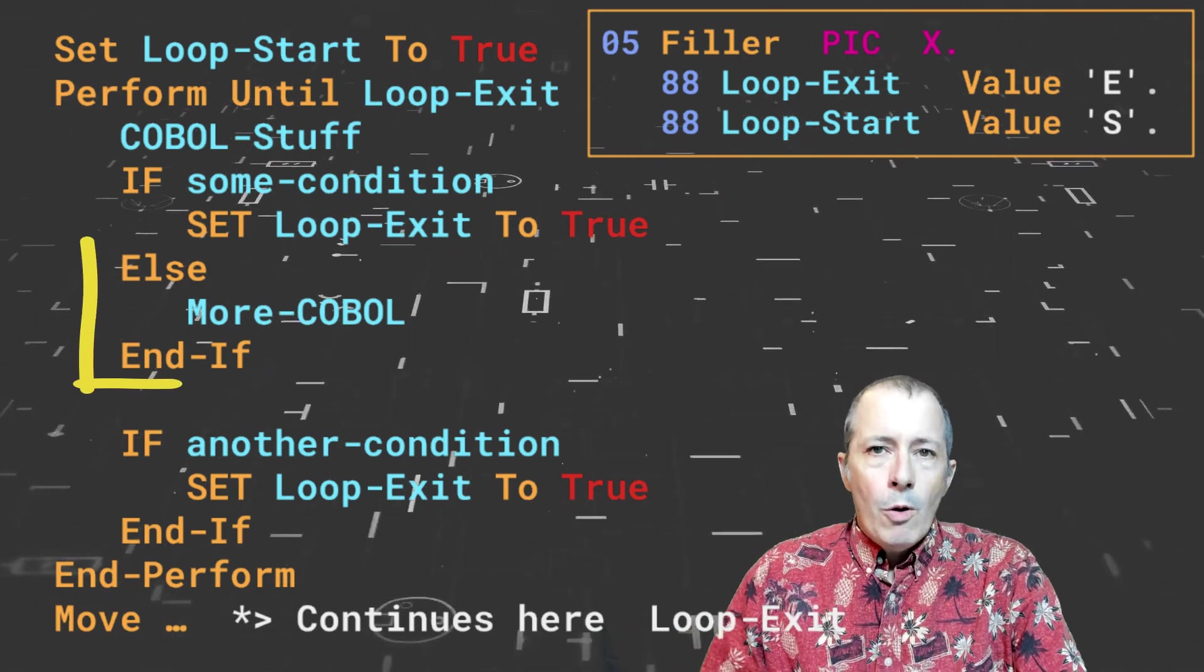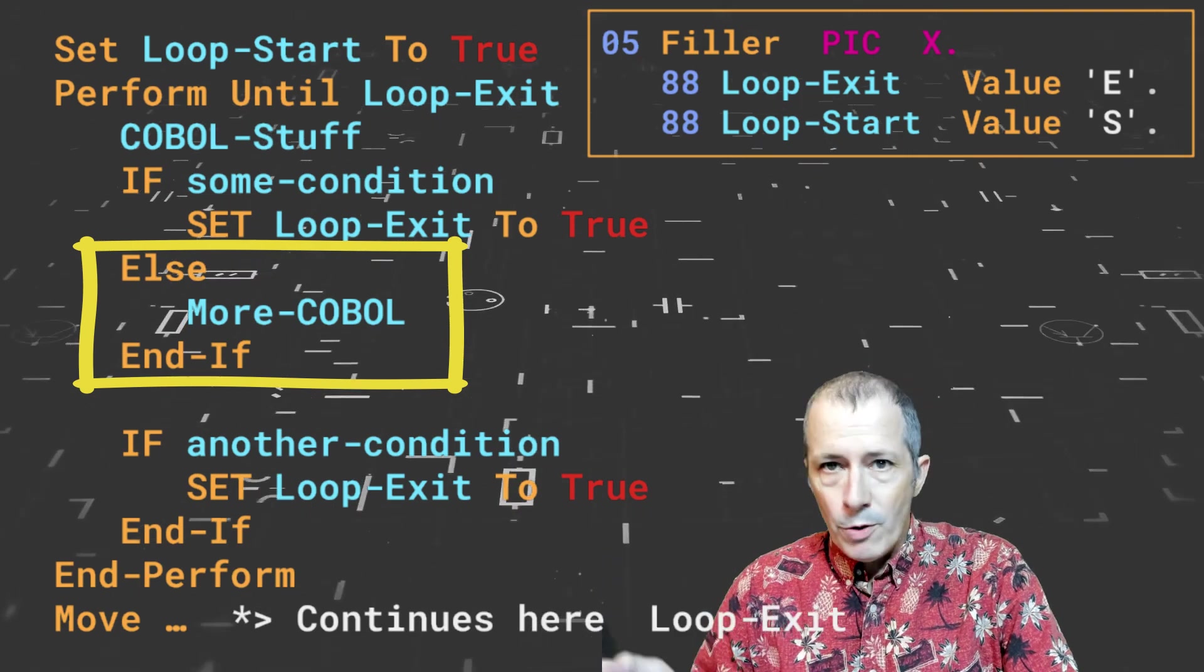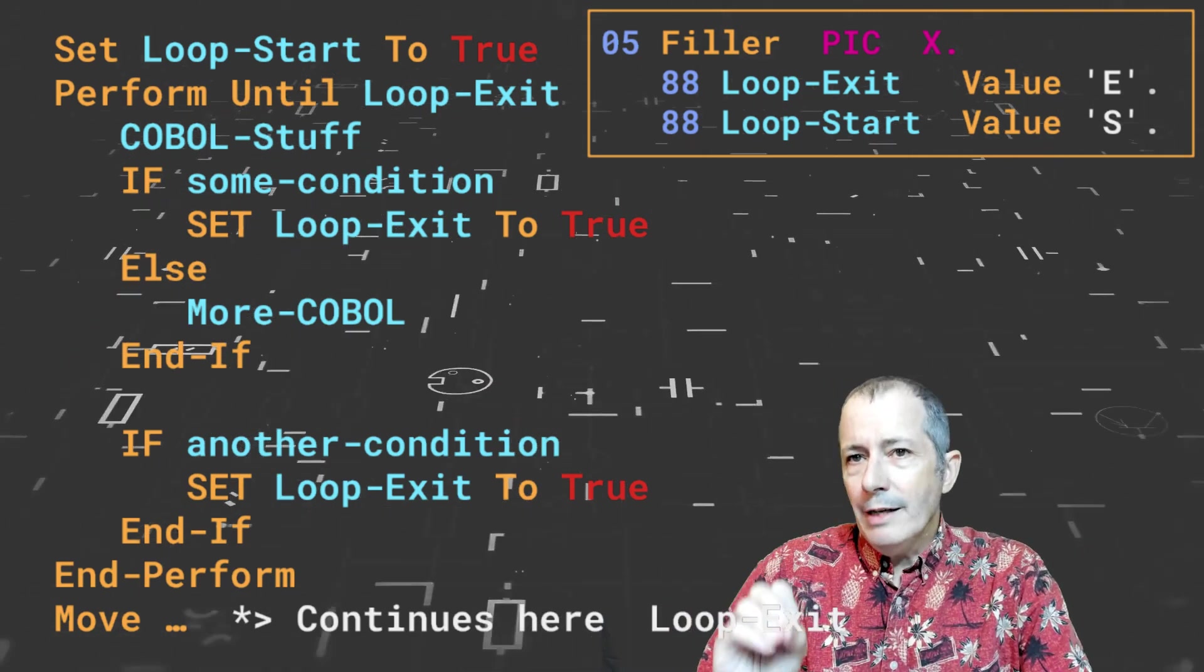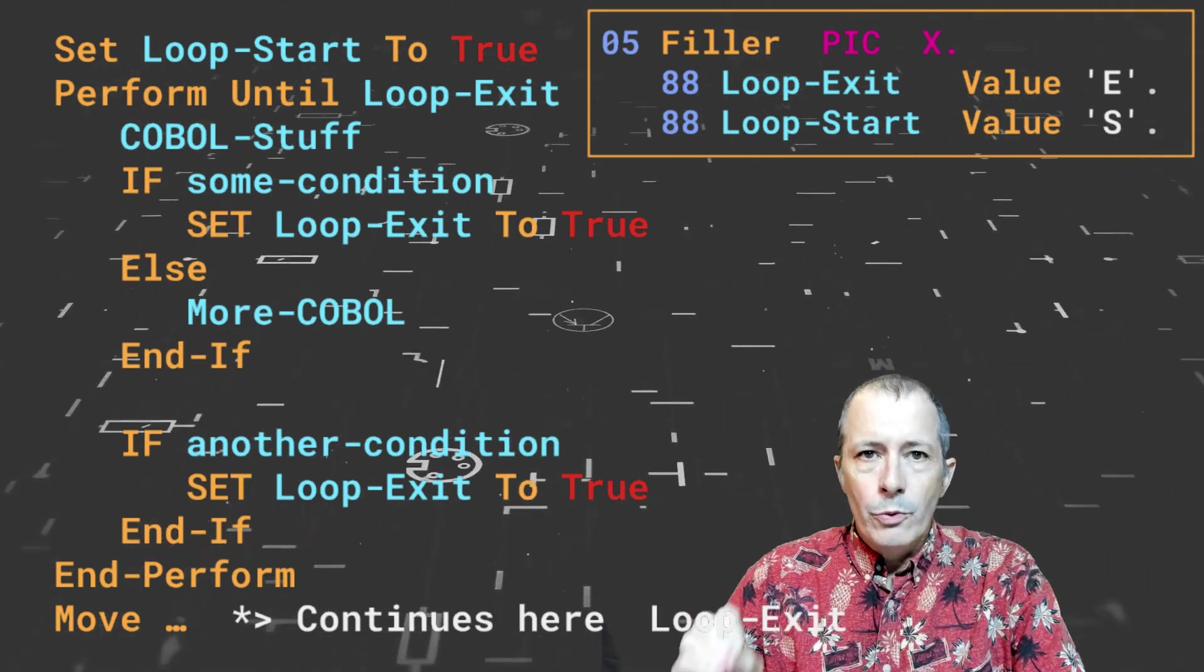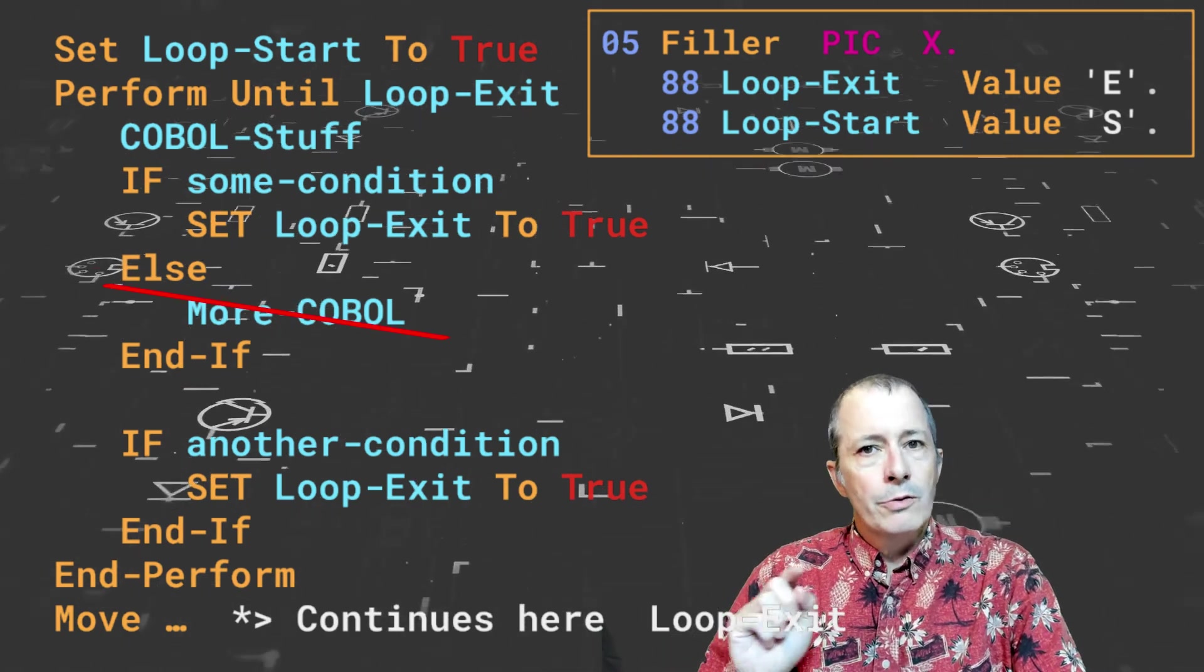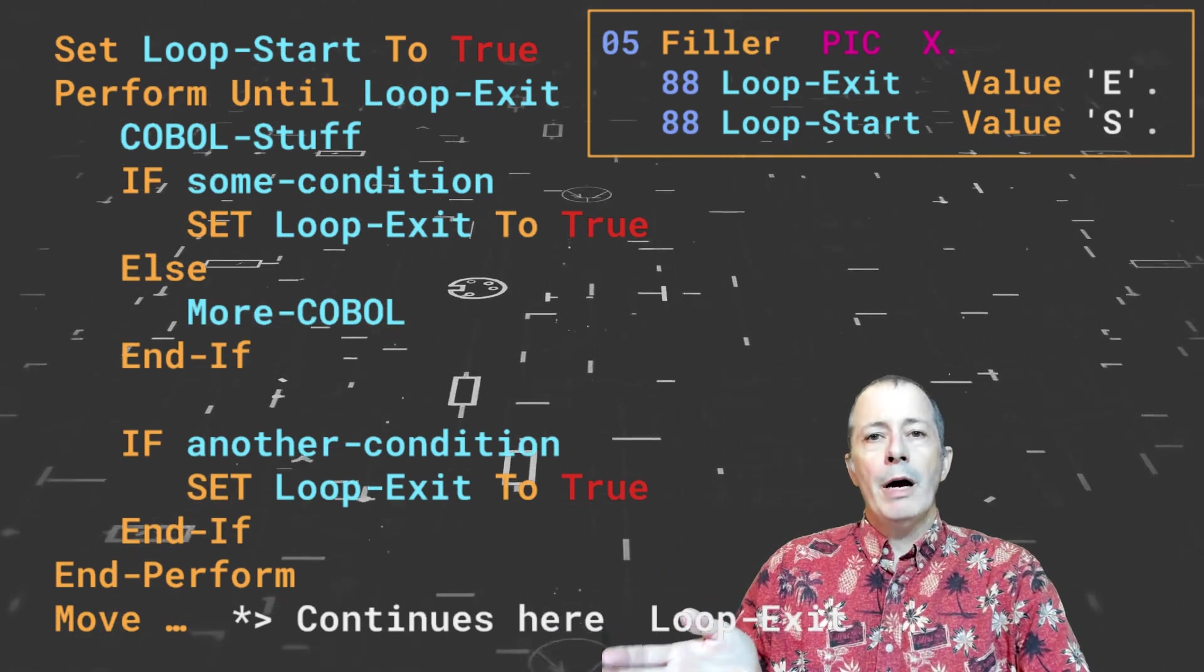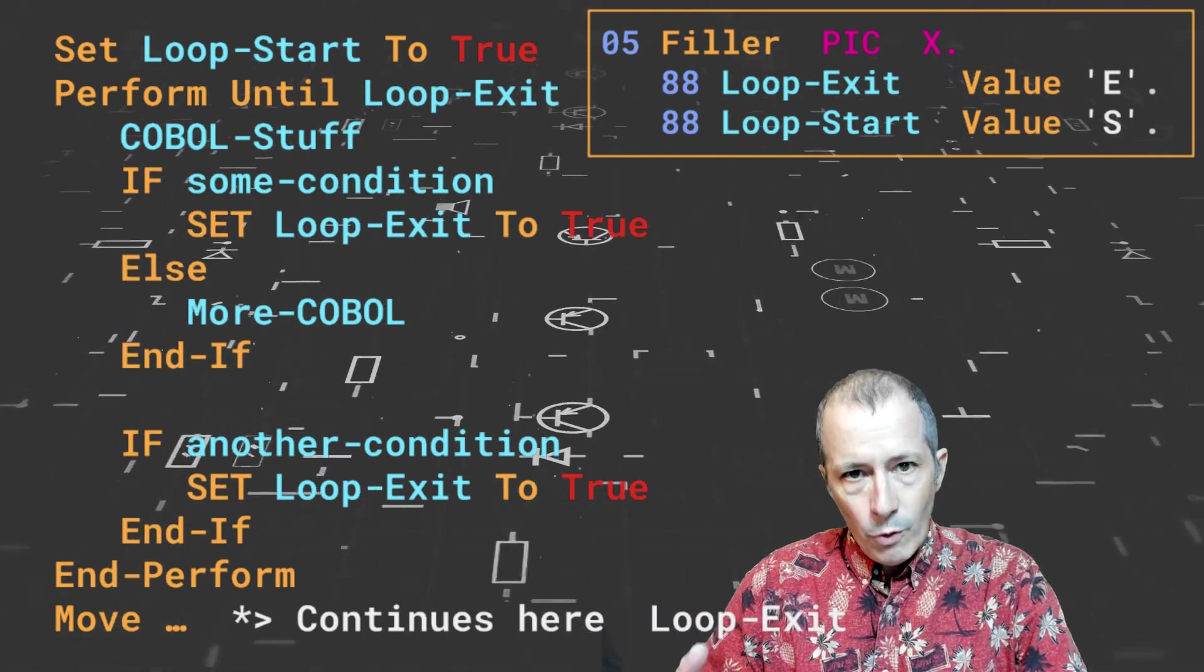Notice the more COBOL portion of the logic. That is part of the else on purpose. If the loop exit flag is set to true, we do not want the more COBOL line to be performed because those lines might change the final result. They were made part of the else to avoid that issue.